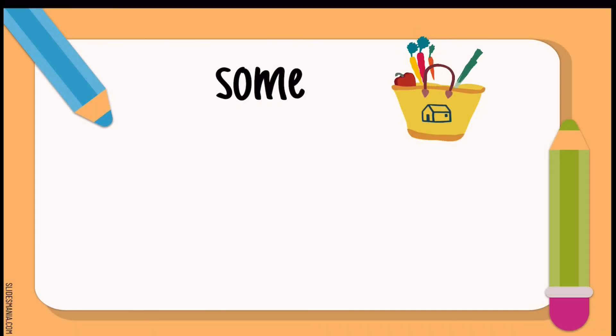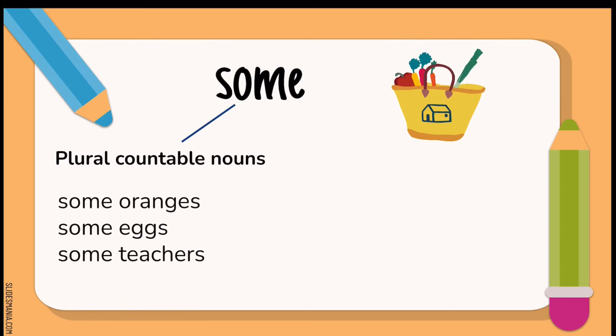Now, let's talk about some. We talked about a and an for singular when we talk about one countable noun. So, we use some when we talk about plural countable nouns. Nouns that we can count, like some oranges, some eggs, some teachers.